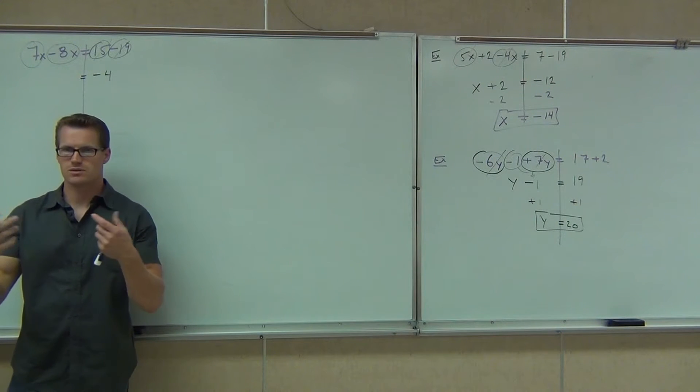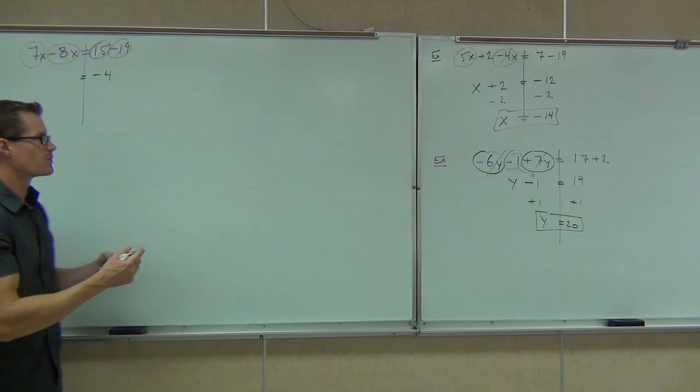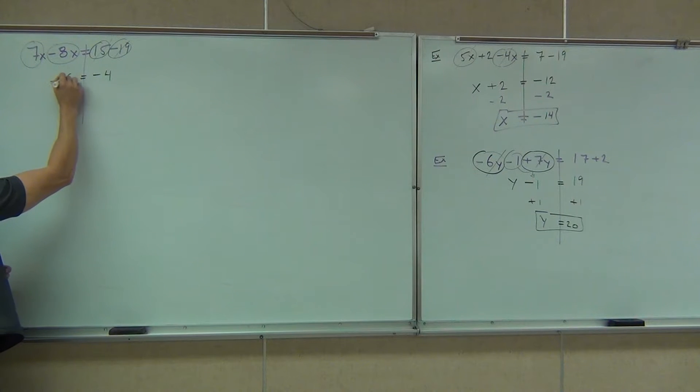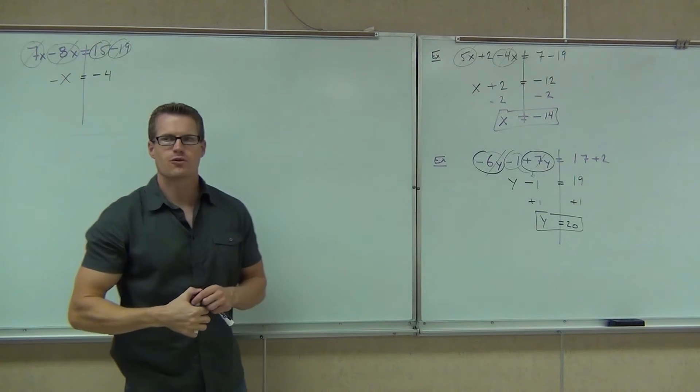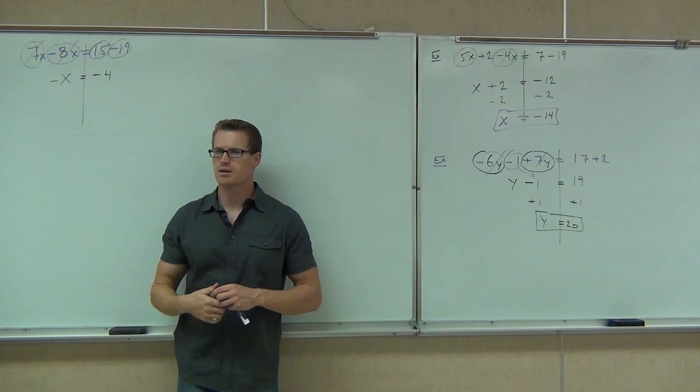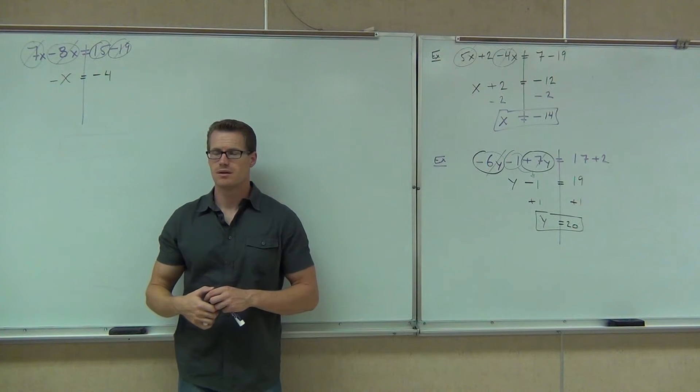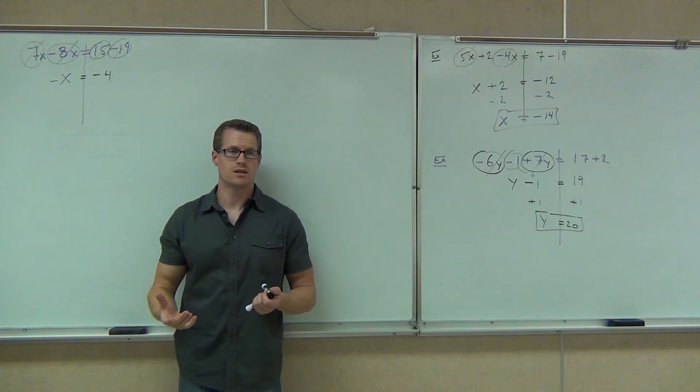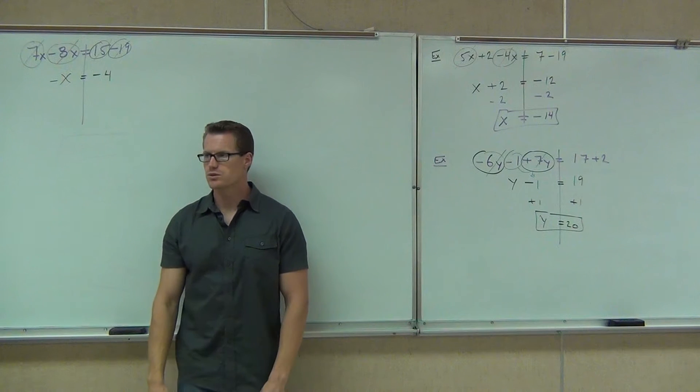Definitely negative x because we have different signs, we subtract some bigger number. For sure negative x. Now you tell me, are we looking for negative x or are we looking for x? This isn't good enough for us then. How in the world do we get rid of the negative? Divide by negative 1.